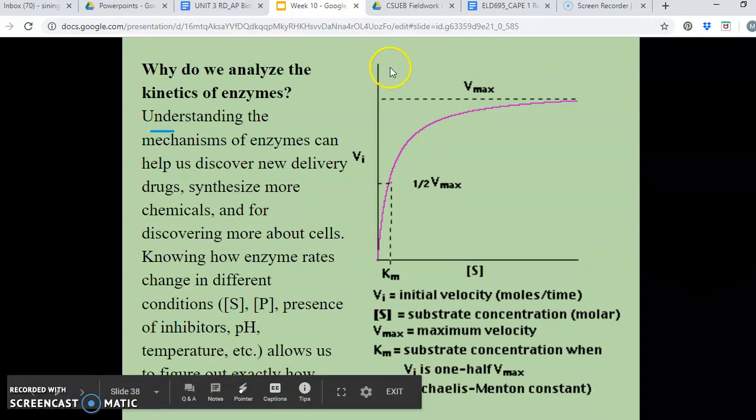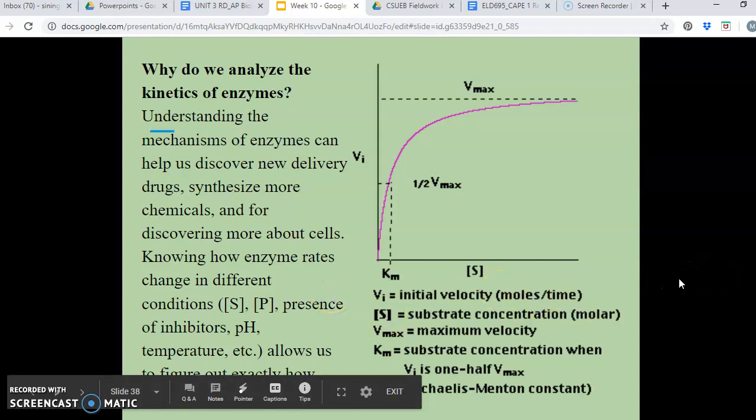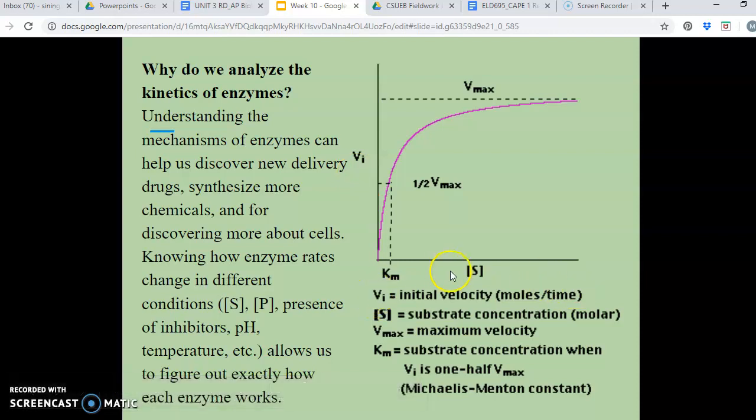So in this graph, this is actually a common, what you would see, rate of reaction graph, or rate of reaction over substrate concentration graph. So right here we have the rate of reaction, and then here we're measuring the substrate concentration. And in this graph, the rate of reaction is denoted as Vi, or the initial velocity. And then the substrate concentration in moles. And then right here is the Vmax, the maximum velocity, so the highest rate of reaction that the enzyme can convert the substrate into product. And then the Km measurement here is the substrate concentration at which the rate of reaction is half of the Vmax.